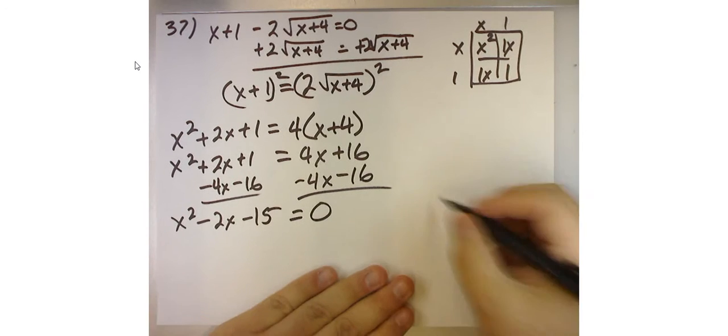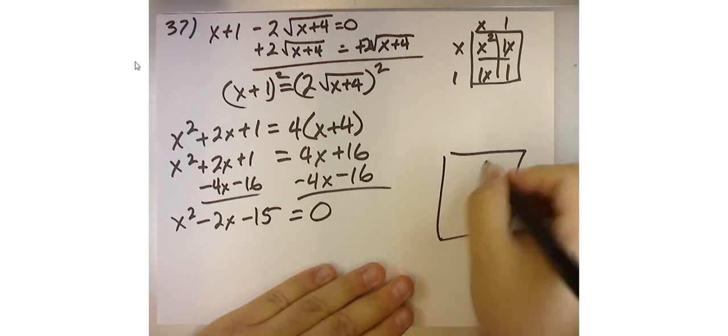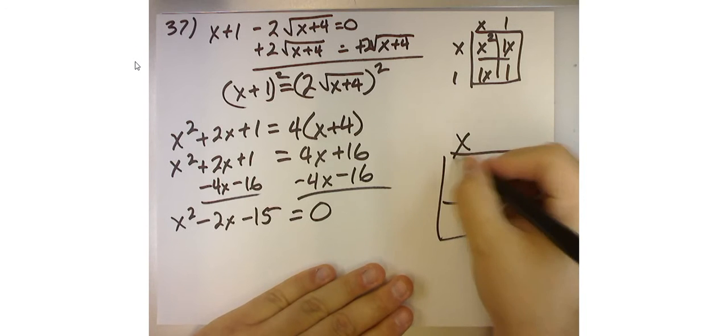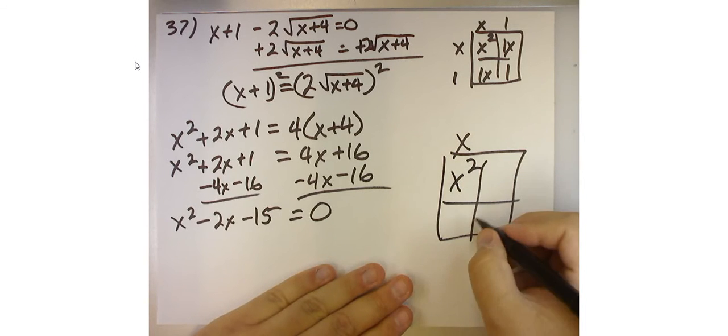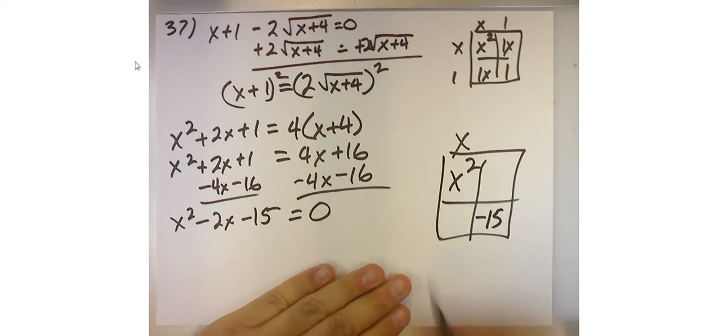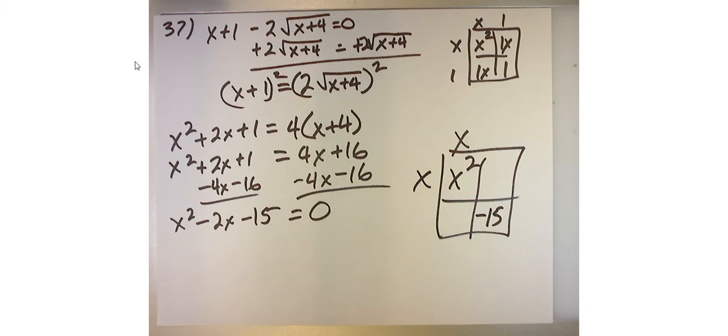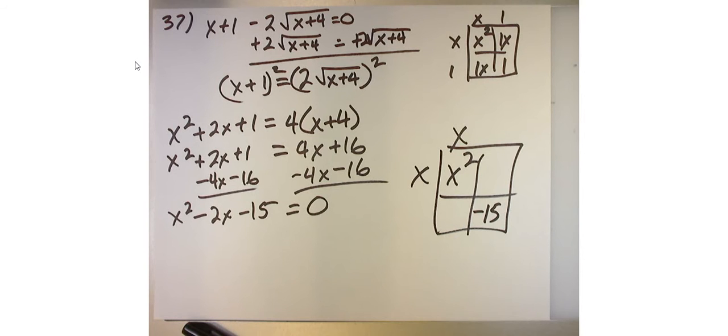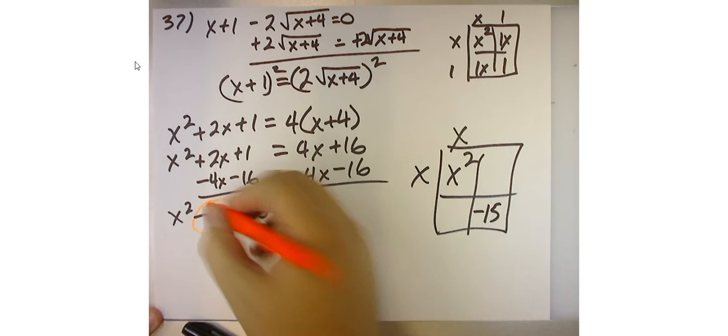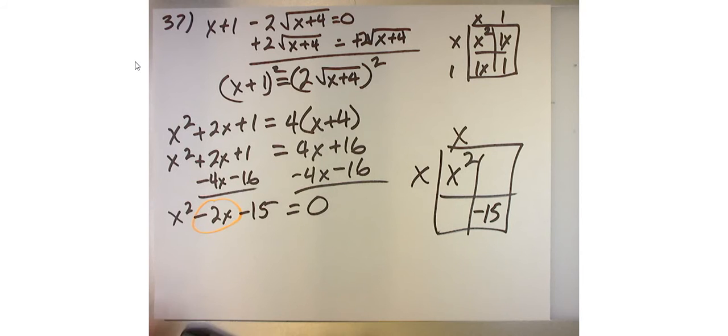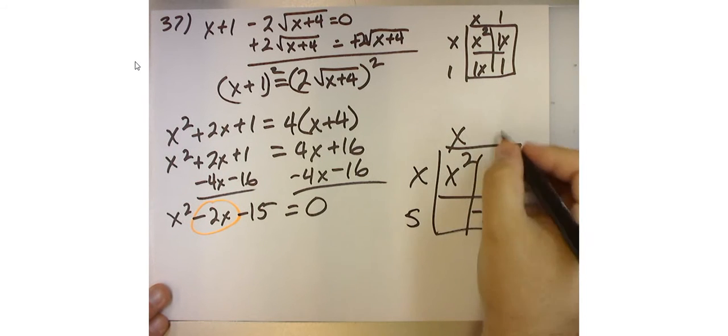Now, this might be factorable. I don't know. We'll try it out. Actually, I do know because I've already guessed. If I take the first term and the last term, the only way I can get x² is x times x. Now, I need to find two numbers that when I multiply them become -15, but when I add them up, they equal -2x.